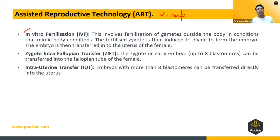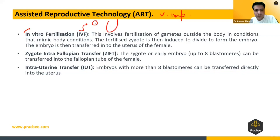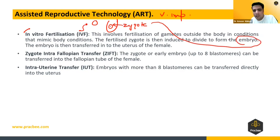Number one is In Vitro Fertilization. In vitro means outside the body — the fertilization occurs outside the body. The ova and sperm are fused outside, in a test tube. This leads to the formation of a zygote, and this zygote divides to form an embryo.